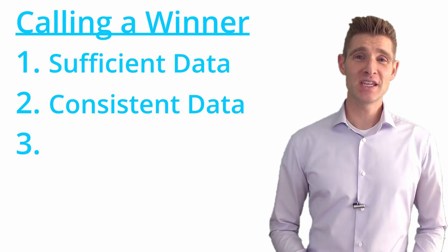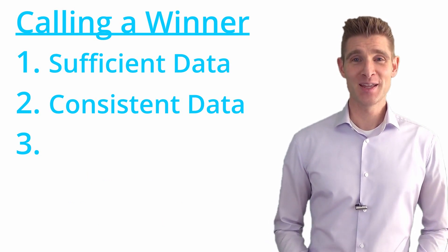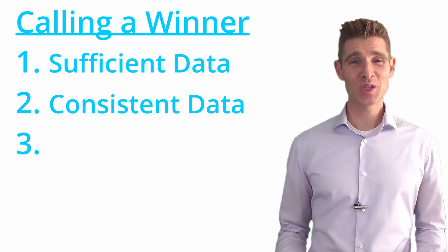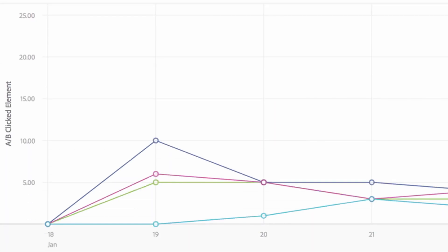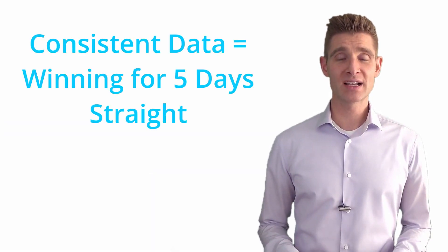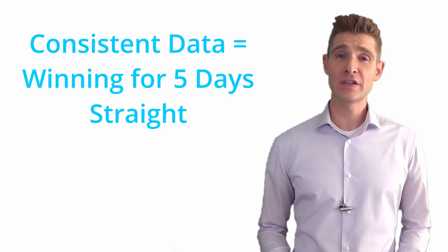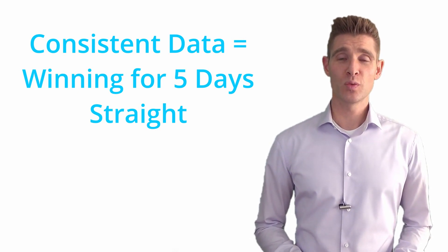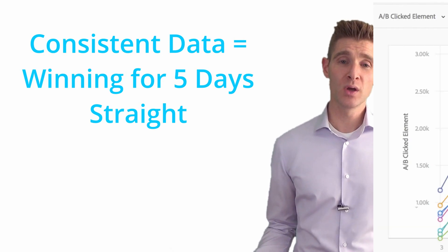The second thing you need is consistent data. This is where the human element of interpretation comes in. When you run your reports and look at the graph of conversions, the first few days you're going to have a lot of crossover — that's natural, the dust is settling. What you want to look for is consistent data: for a test to be a winner, it needs to be winning consistently, and I like to see it winning for at least five days.